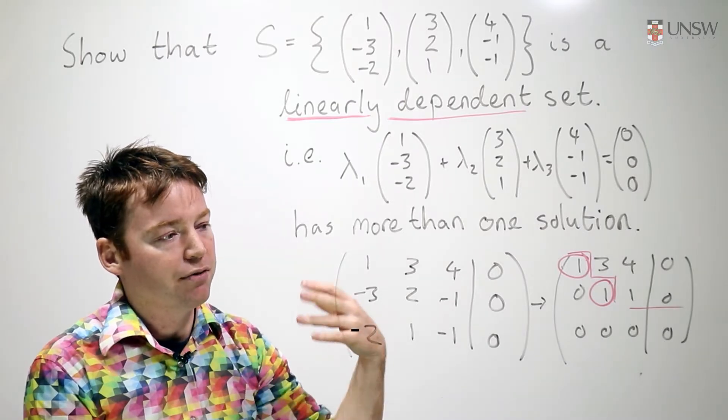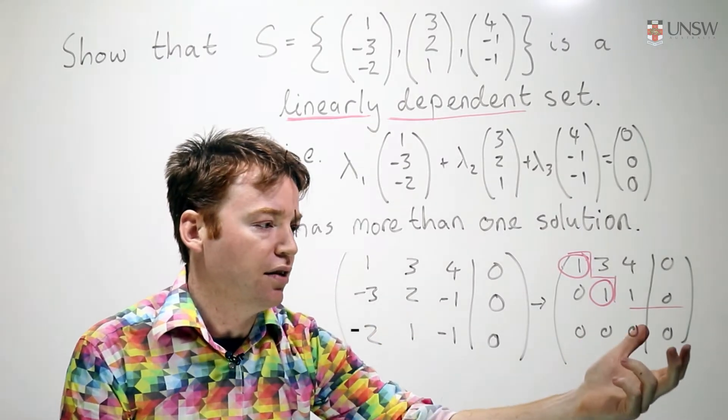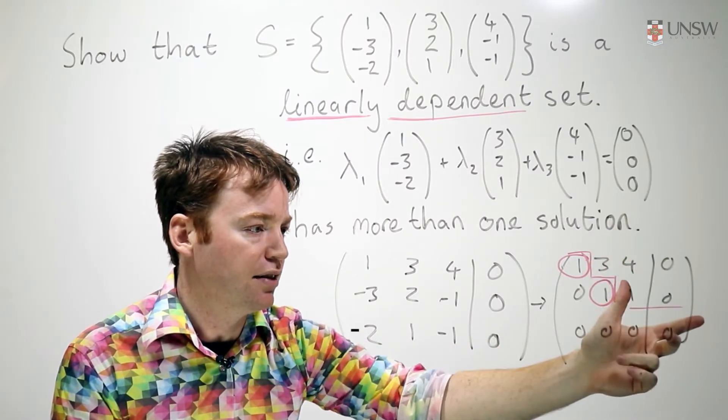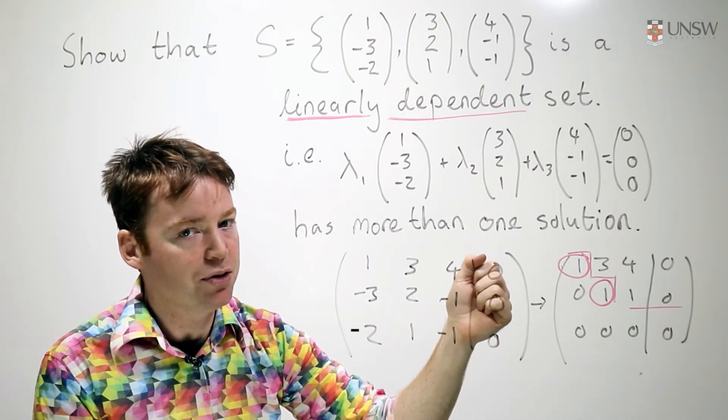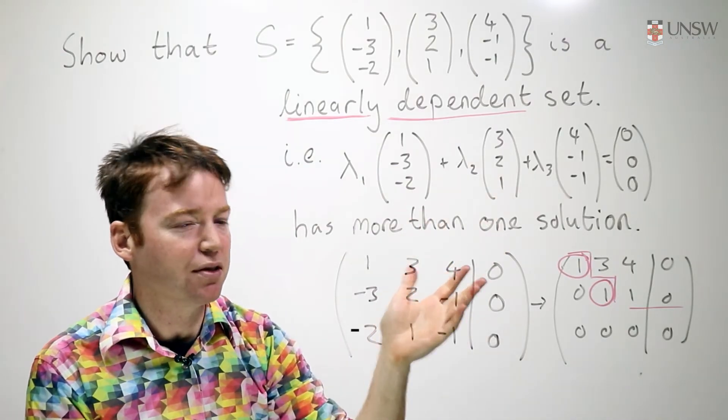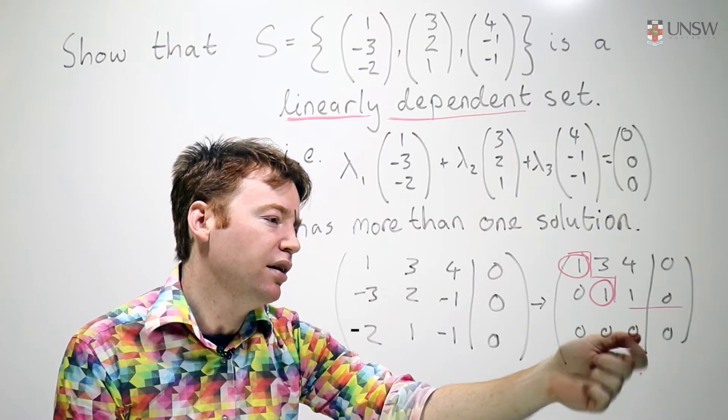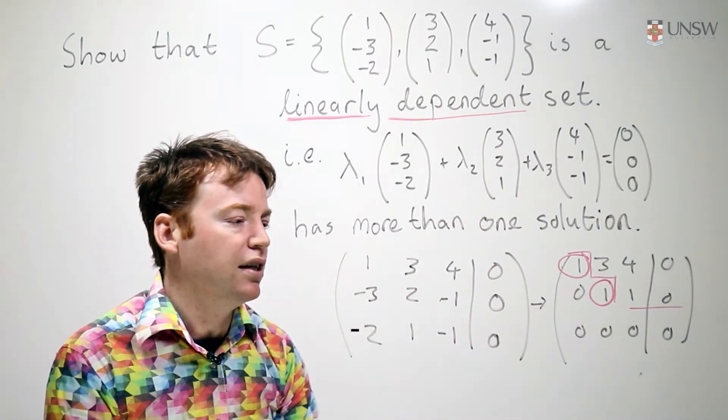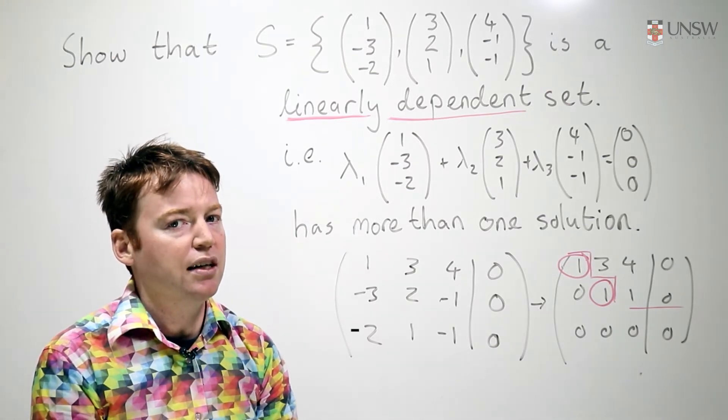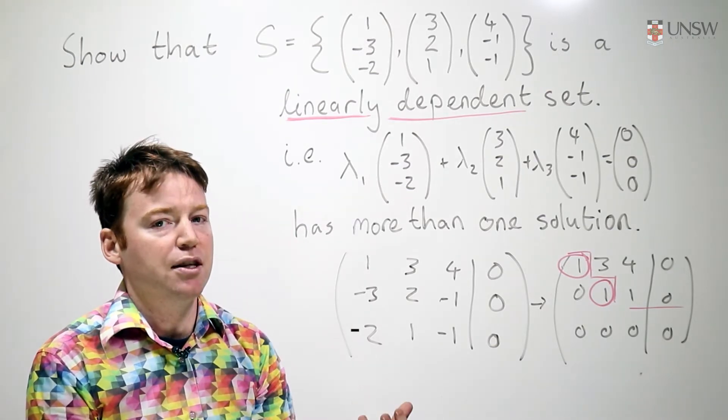And once you have row echelon form, you can read off the number of solutions. The constant term here or the augmented vector is not leading. That tells me there are solutions. I already knew that just by looking at this equation. The presence of the non-leading column here, a column with no leading term in it, tells you that there are infinitely many solutions.